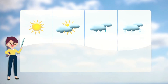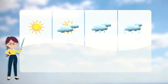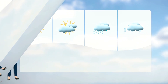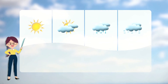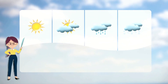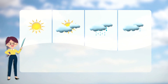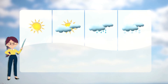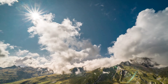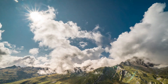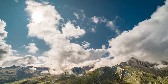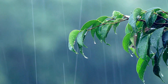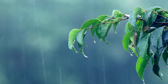First, let's talk about weather. Weather is what's happening outside right now. It can be sunny, rainy, windy, snowy, or cloudy. A sun shining, raindrops falling, snowflakes. Weather changes every day, even every hour.